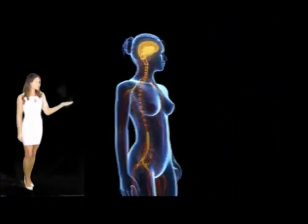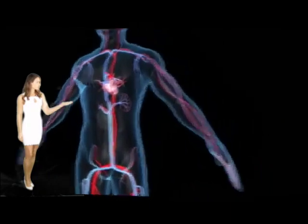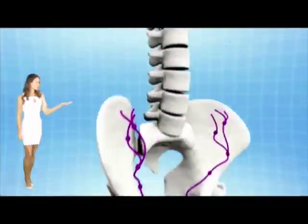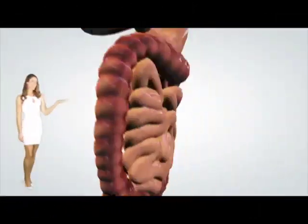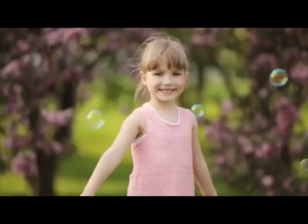For example, the integumentary, musculoskeletal, nervous system, circulatory, lymphatic, respiratory, endocrine, urinary, reproductive, and digestive.